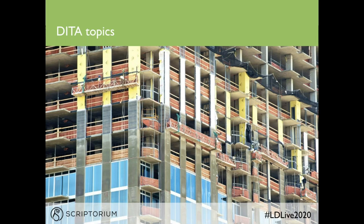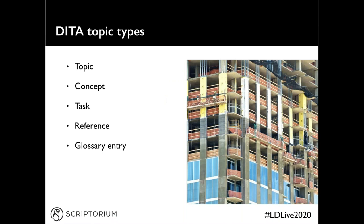A DITA topic is a building block of content. One of the fundamental principles of DITA is that different types of content require different containers or topic types, so elements in the topic can be specific to the content being described. The DITA standard includes topic types intended for different purposes, and each topic type contributes to the semantic value of your content — it tells you what kind of information is contained within it. DITA defines a number of basic topic types: topic, concept, task, reference, and glossary entry. Let's take a closer look at each.